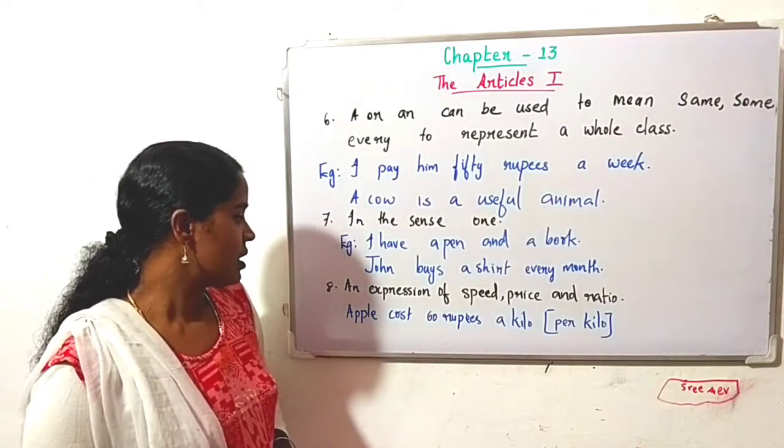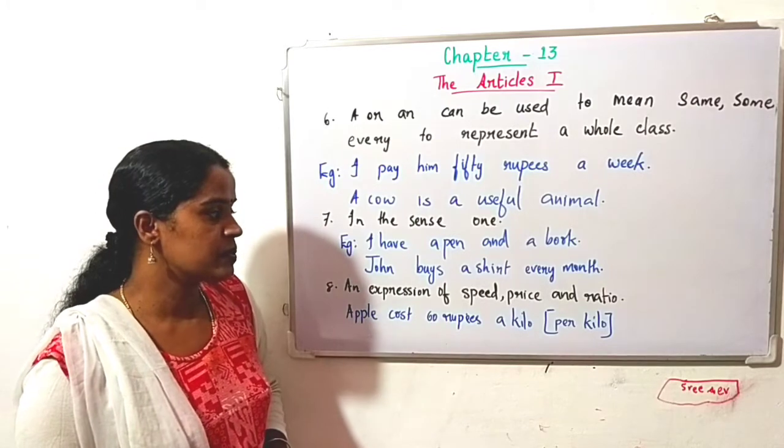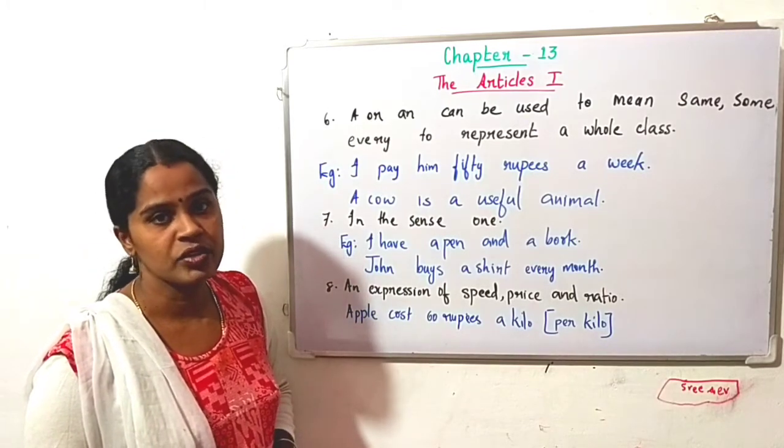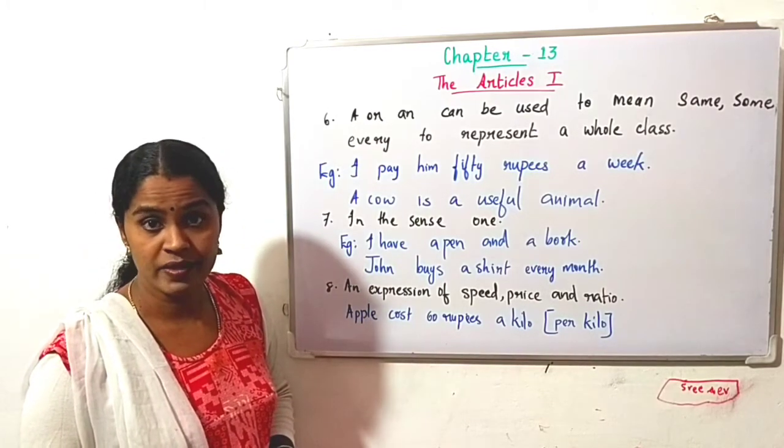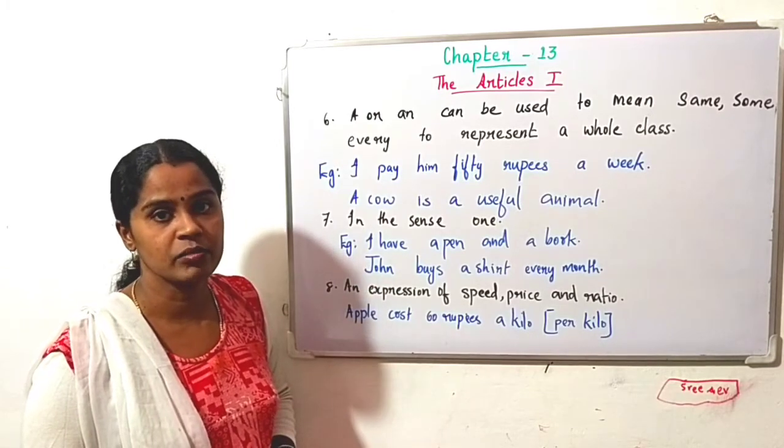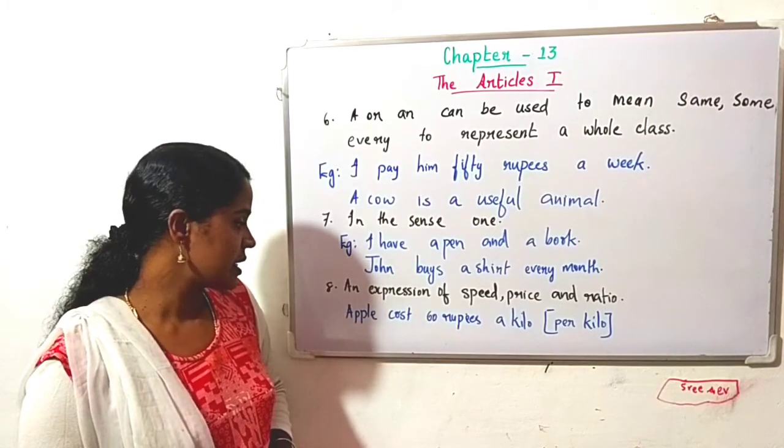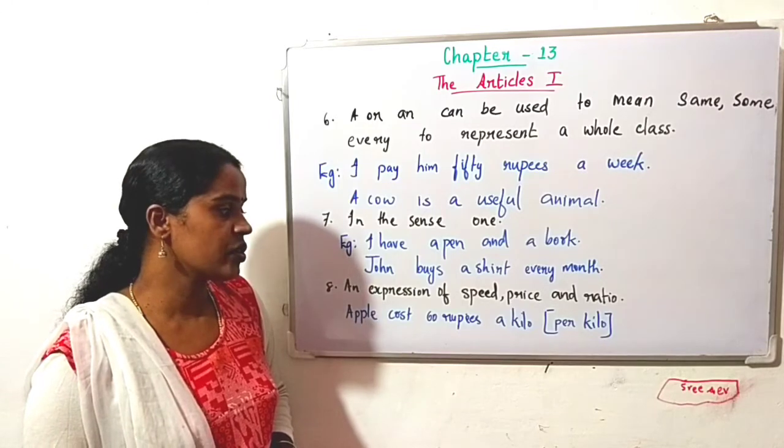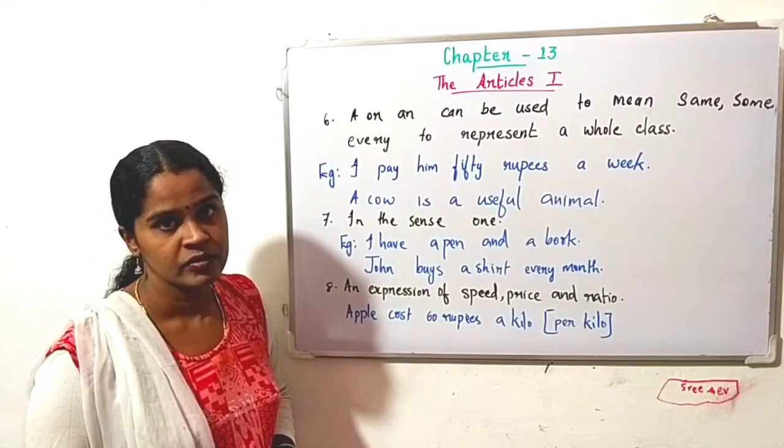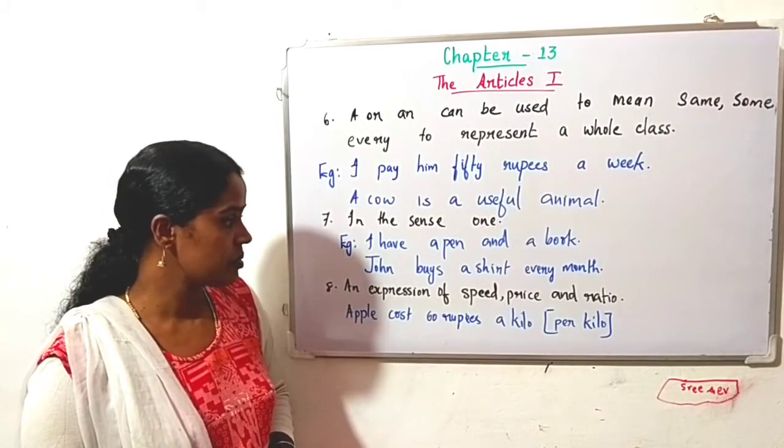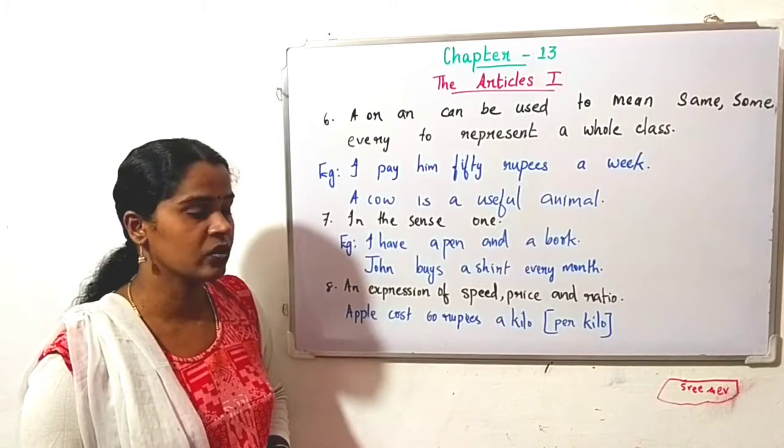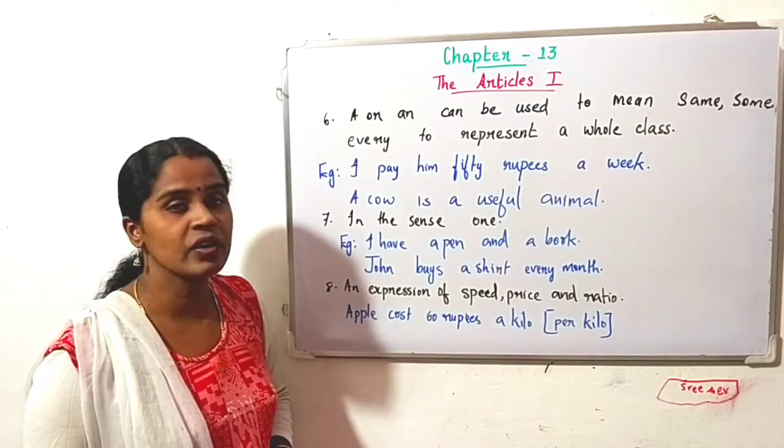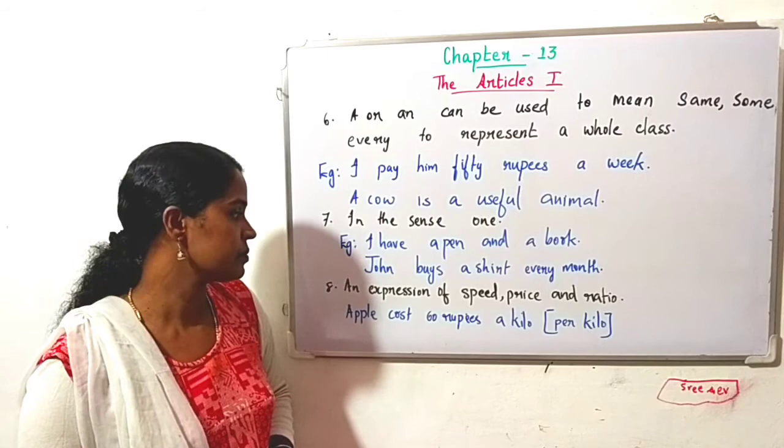Eighth one: an expression of speed, price, and ratio. See the example: Apple costs 60 rupees a kilo. Here 'a kilo' means per each kilo. So that is ratio.